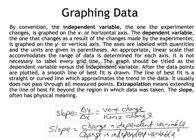One helpful thing you could do in your notes for this lecture, under graphing data, is to make a list of things that every correct graph has in common. The independent variable — the thing the experimenter changes on purpose — always goes on the x-axis, which is horizontal. The dependent variable — the thing you measure that changes as a result — goes on the y-axis, the vertical axis. Always put the independent variable on x and the dependent variable on y.